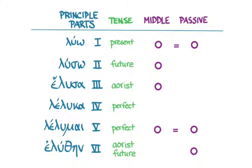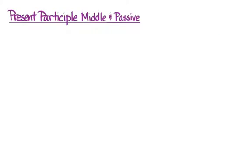Remember how some tenses — the present and the perfect — had the same forms in the middle and the passive for indicatives, subjunctives, optatives, and infinitives? The same goes for participles. So we'll start with the present participle middle and passive.